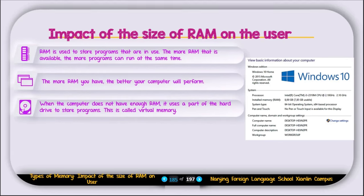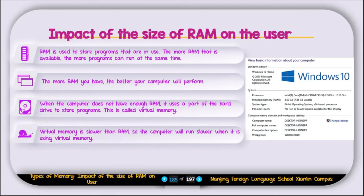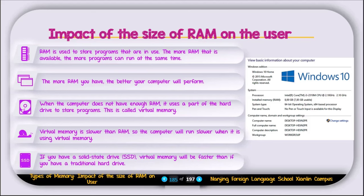When the computer does not have enough RAM, it uses part of the hard drive to store programs. This is called virtual memory. Virtual memory is slower than RAM, so the computer will run slower when using virtual memory. If you have a solid state drive or SSD, virtual memory will be faster than if you have a traditional hard drive, because traditional hard drives have moving parts like the read/write head and disk.